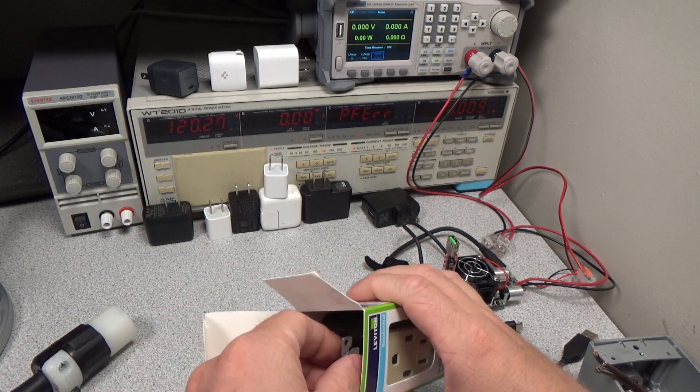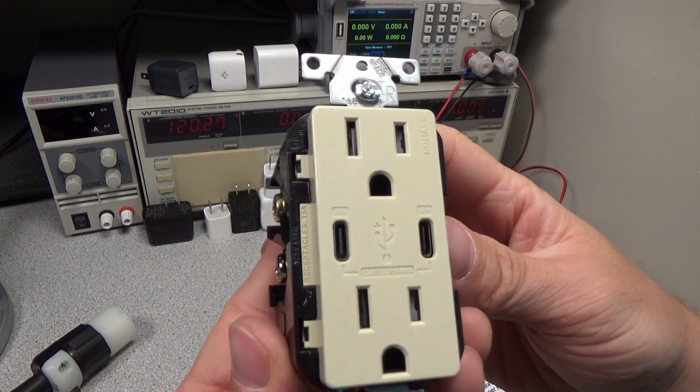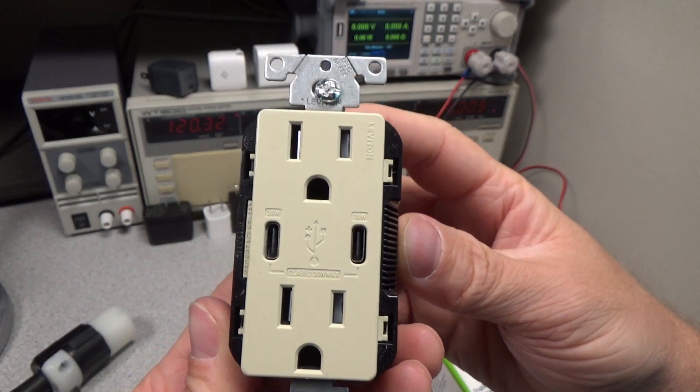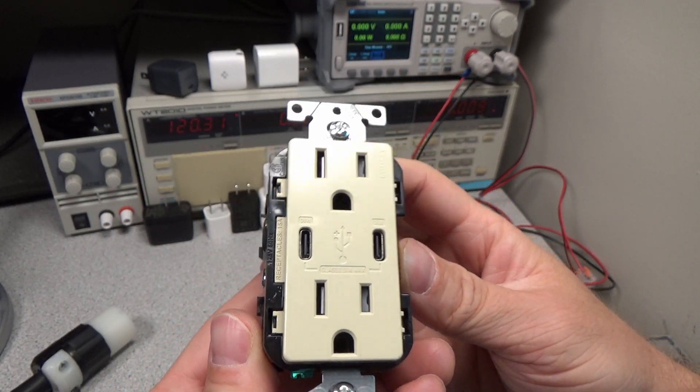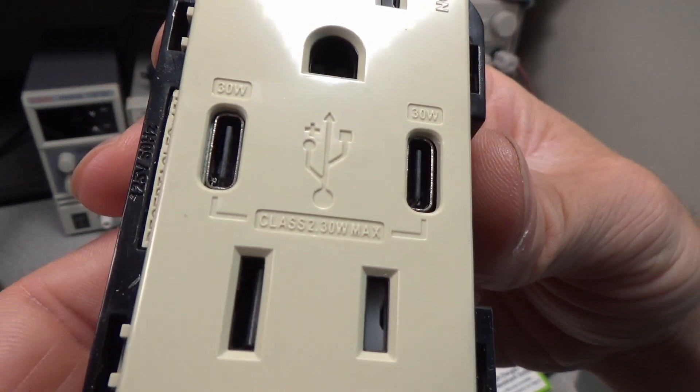It looks like each port can deliver 30 watts, but the total for the device is also 30 watts. See those two USB-C ports? And it does say on the front 30 watts max across the both ports. And the class 2 is talking about the isolation it has between the mains and those USB-C ports.